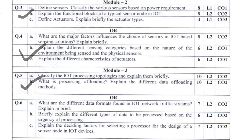In the all-choice section for Module 3, you again have 20 marks split into 7-6-7. What are the different data formats found in IoT network traffic streams? You will draw the data formats and explain those data frames. Second: explain different types of data to be processed based on the urgency of processing. Third: explain the deciding factors for selecting a processor for a sensor node in an IoT device, listing the factors which carries 7 marks.